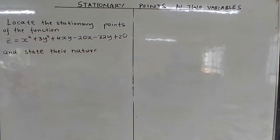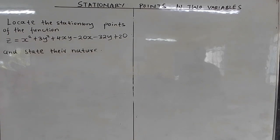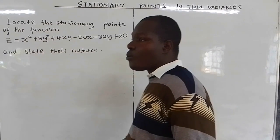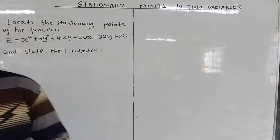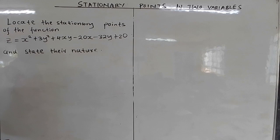Locate the stationary points of the function z = x² + 3y² + 4xy - 20x - 32y + 20, and state their nature. To locate the stationary point and state its nature, you must get all 6 partial derivatives. So the first step is to get all 6 partial derivatives.